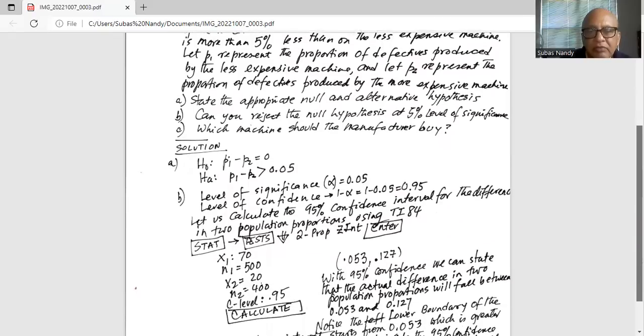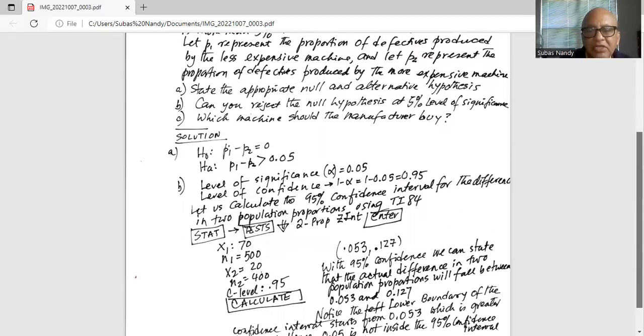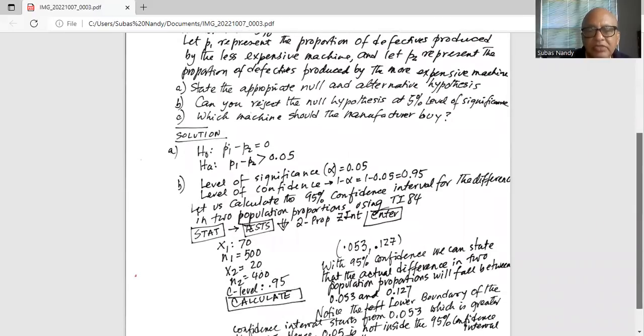Now we will enter the information. x1 is 70, n1 is 500, x2 is 20, n2 is 400, c level is 0.95. Then we scroll the cursor down to calculate and hit enter.